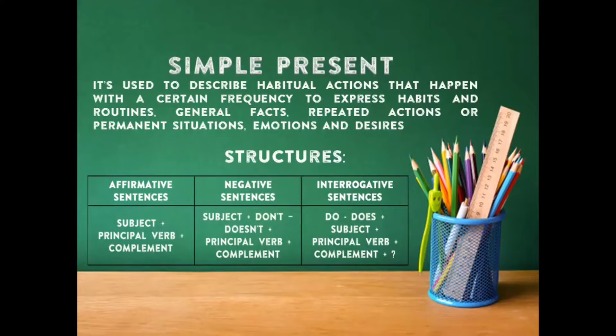Tenemos la primera que es el presente simple. Es usado para describir acciones habituales que ocurren con ciertas frecuencias, para expresar hábitos o rutinas, reacciones repetidas o situaciones permanentes, emociones o deseos. Con la oración afirmativa lleva el sujeto, un verbo principal y un complemento. Recuerden que en el presente simple, con la tercera persona — he, she, it — colocaríamos la S o las reglas de las terceras personas en el verbo.